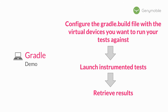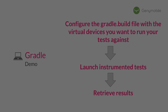Here are the steps you need to take to use the GeniMotion Gradle plugin. First, configure the Gradle build file with the virtual devices you want to run your tests against using our GeniMotion Gradle plugin. After this, you can launch your instrumented tests. And finally, you are able to retrieve the results of your tests. Now we will run a demo of how the GeniMotion Gradle plugin can help you run your automated tests seamlessly using GeniMotion virtual devices.